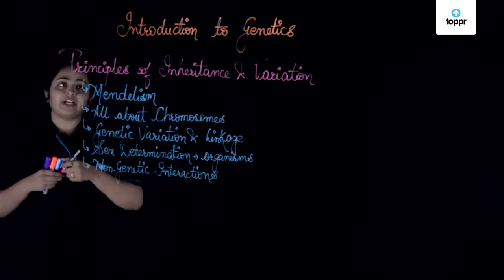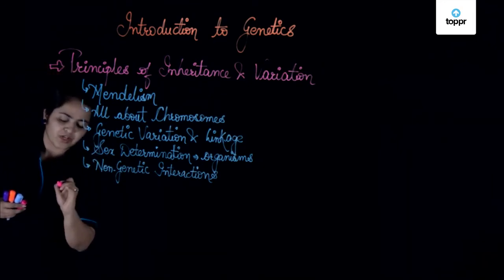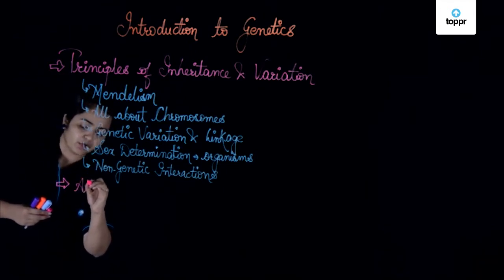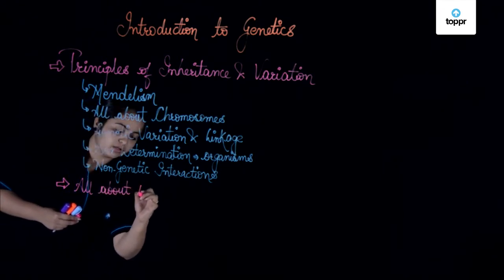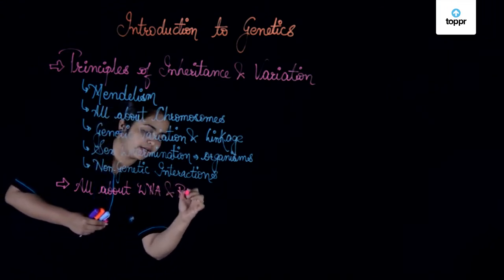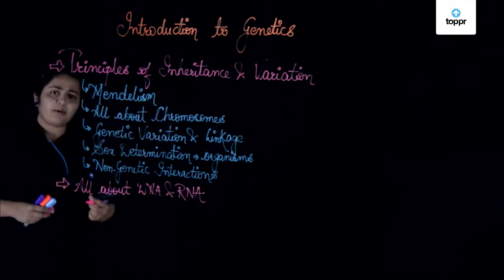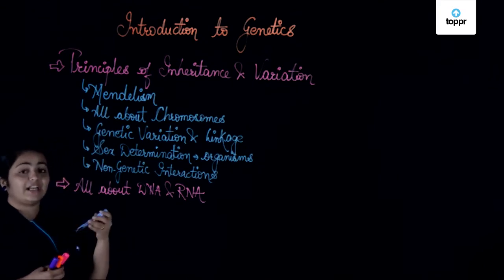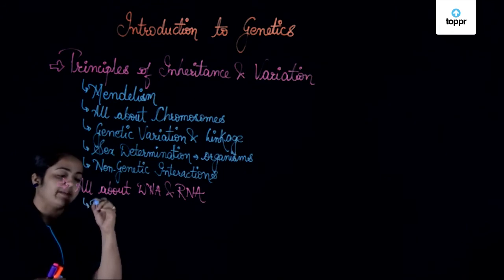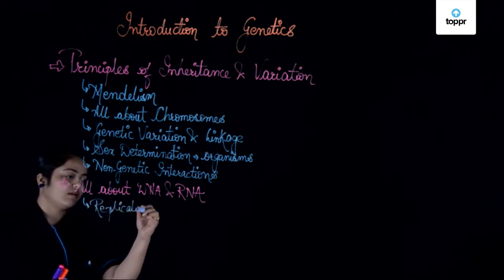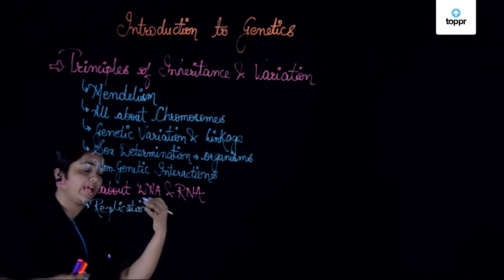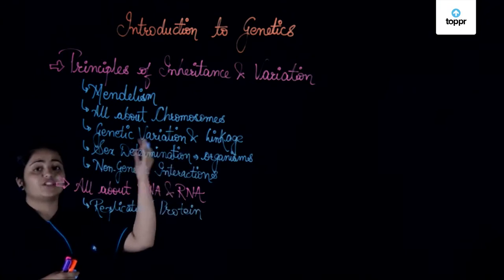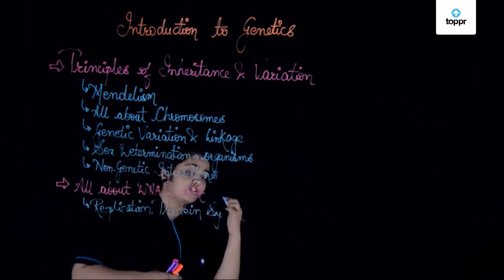After principles of inheritance and variation, we take a look at the different kinds of nucleic acids. That means we'll be learning all about DNA and RNA — the various processes related to DNA and RNA. We'll be taking a look at replication of DNA, followed by a few important processes of protein synthesis. How is protein made up? How is the long chain of amino acids joined together? That means the process of transcription and translation — in short, we'll be talking about protein synthesis.